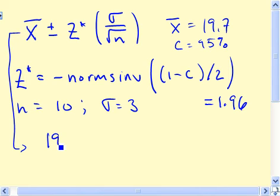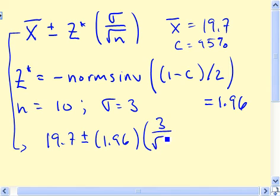We've got 19.7 plus or minus 1.96 times sigma, so 3 divided by the square root of 10.